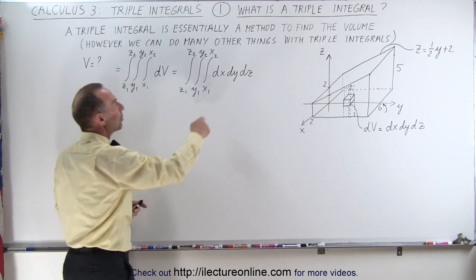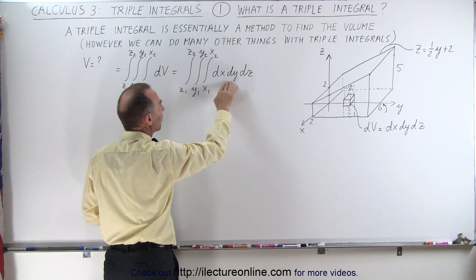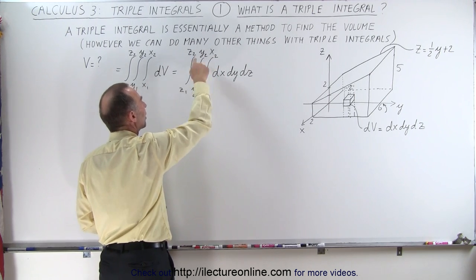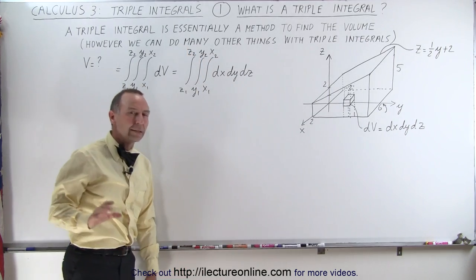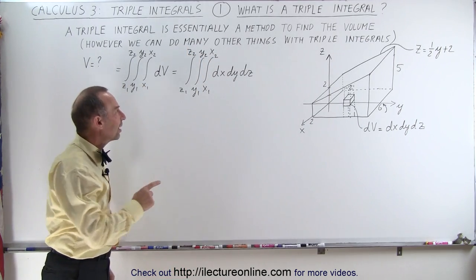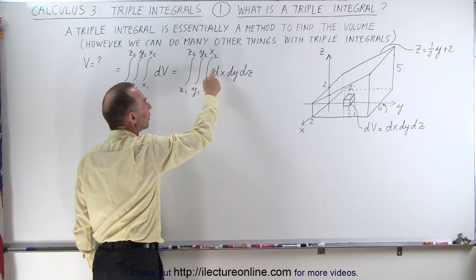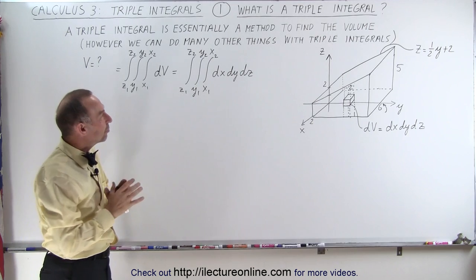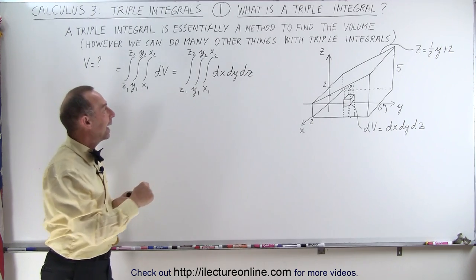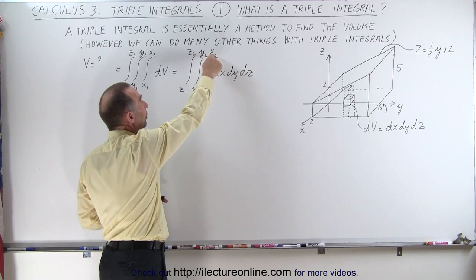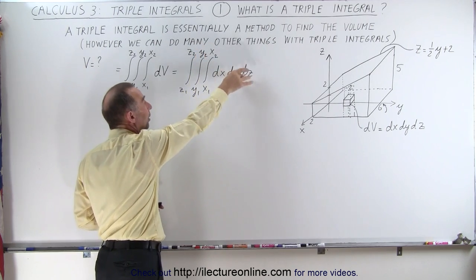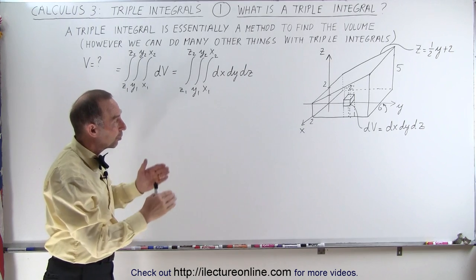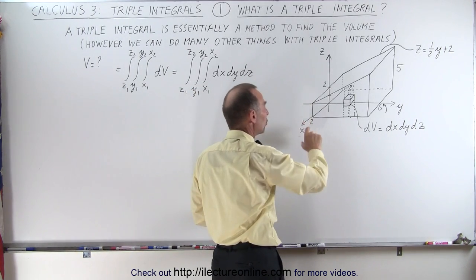Notice that each time we integrate over the x, y, or z dimension, we have to have limits in each of those directions. The key to doing triple integrals is that when you integrate one of the three dimensions, the other two dimensions act as if they are simply constants, so you don't have to worry about them. The limits may be written in terms of the other variables. Here we have a wedge, or a truncated wedge.